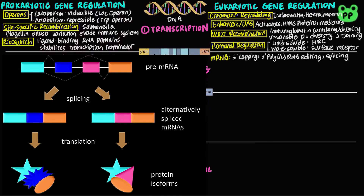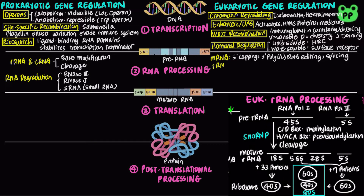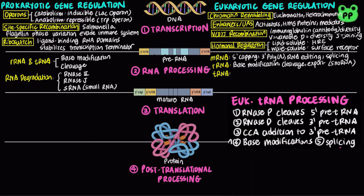Alternative splicing allows the same genes to encode for more than one kind of polypeptide. Eukaryotic ribosomal RNA processing includes base modification, cleavage, and export, which are facilitated by snRNA. Eukaryotic tRNA processing involves base modification, 3' CCA addition, cleavage, and RNA splicing.